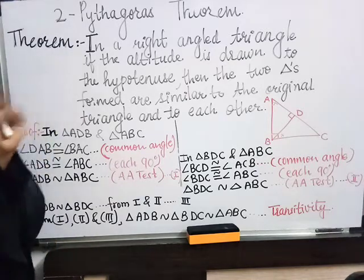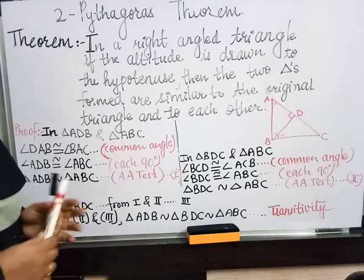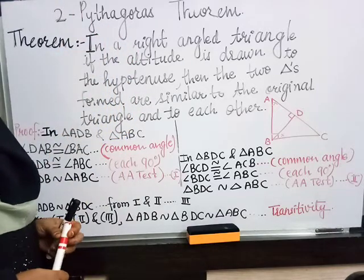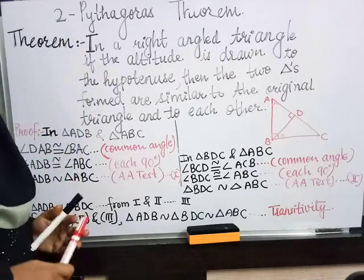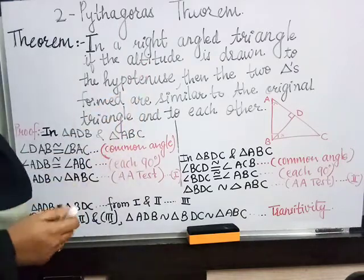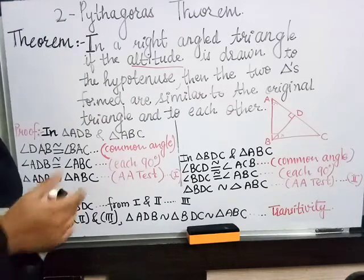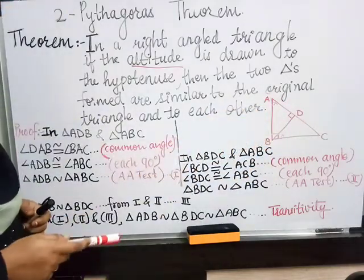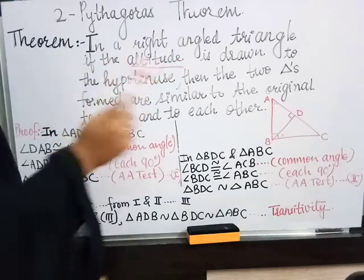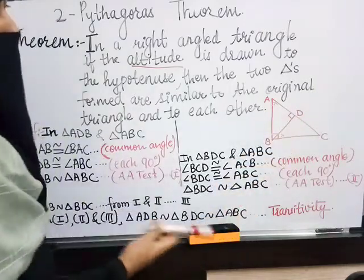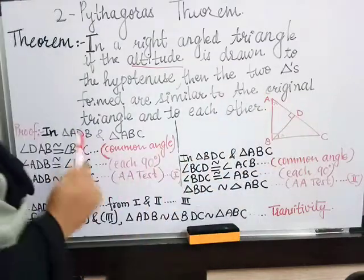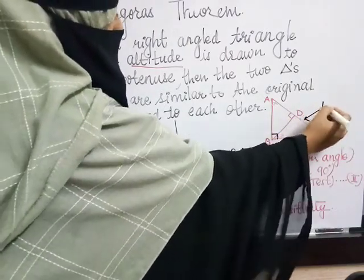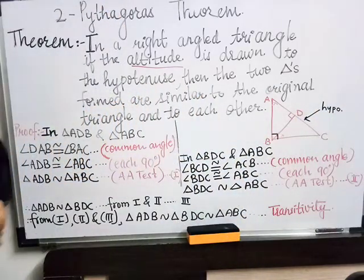Here there is a theorem — the first theorem of this chapter. Pythagoras theorem is always applied to a right-angled triangle. In a right-angled triangle, if the altitude is drawn — altitude means a perpendicular — to the hypotenuse. You should know that the hypotenuse is the side opposite to the 90-degree angle.